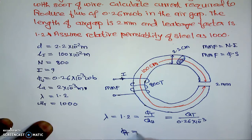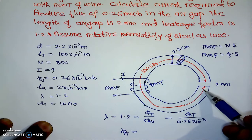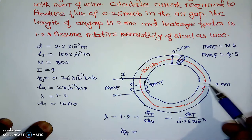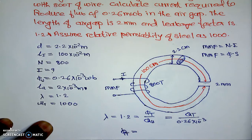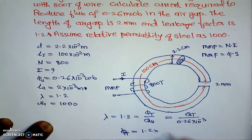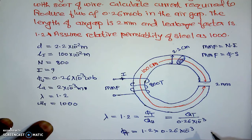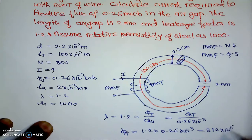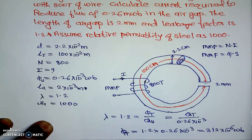When we calculate the MMF related to the magnetic circuit we will use φ_t, and when calculating for the air gap we will use φ_u. Computing the total flux: φ_t = 1.2 × 0.26 × 10⁻³ = 312 × 10⁻⁶ Weber.